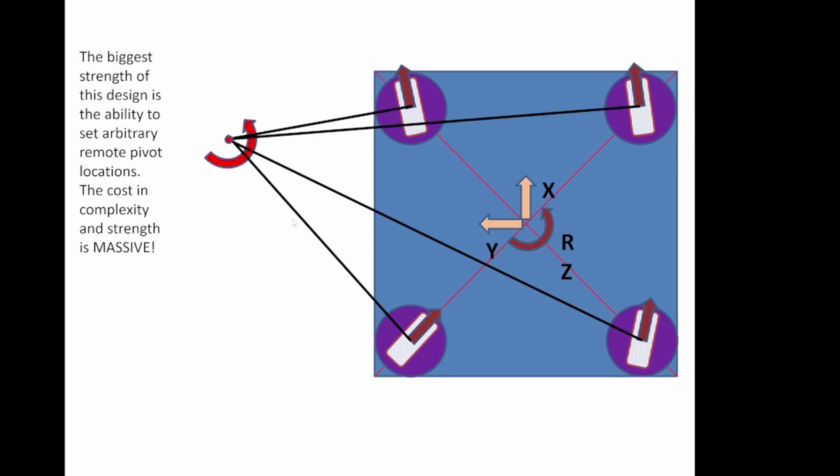Now, the biggest strength of the steerable wheel design is the ability to set an arbitrary pivot point. And that means that if you want to do a combination of X motion and rotation, X motion, Y rotation and rotation, your system can provide traction for all those without any slipping.